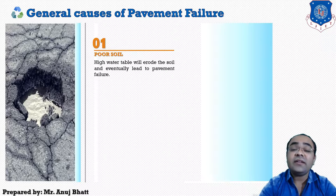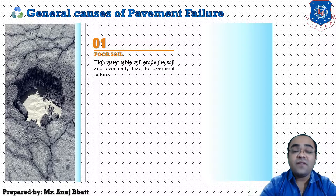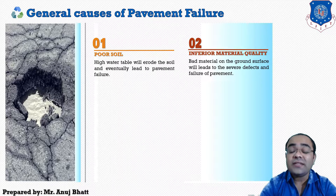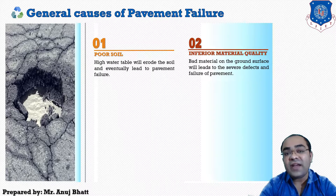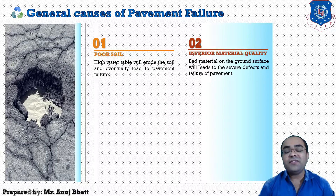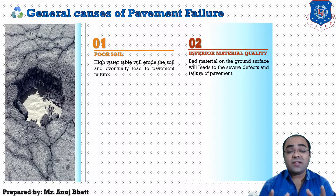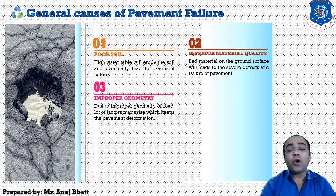The next cause leading to pavement failure is inferior material quality. If the material laid on the ground is not in good condition, it will lead to severe defects and failure of the pavement. Whatever material we use for the pavement structure — whether soil, aggregate, or bituminous material — those materials should be of good quality.